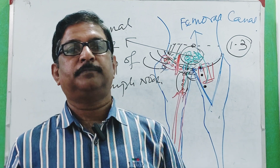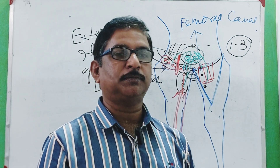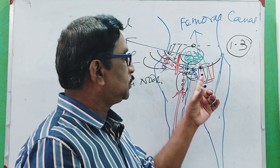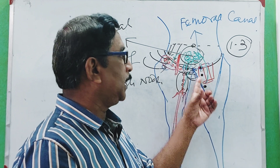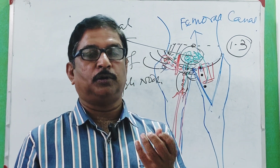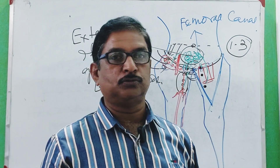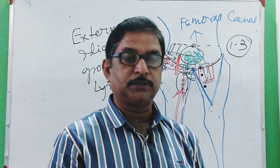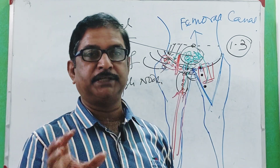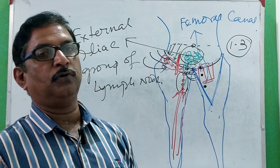Another important applied question: in carcinoma of the glans penis or glans clitoris, which group of lymph nodes will be affected? The answer is the deep group of lymph nodes — not the superficial group. Also, the testes, though part of the genitalia, have their lymphatics not drained into this group — rather they drain into the abdominal group, that is the para-aortic group of lymph nodes. So these are the basics of inguinal lymph nodes. Classify the groups, describe the drainage areas, draw and label the diagram.